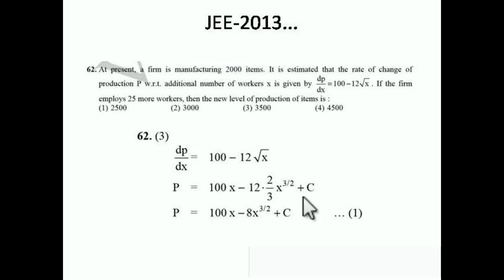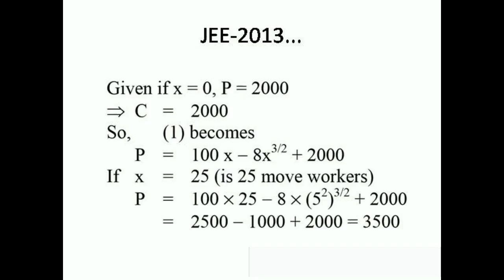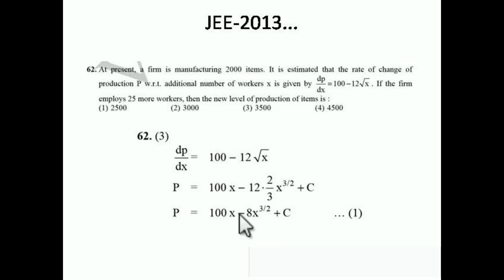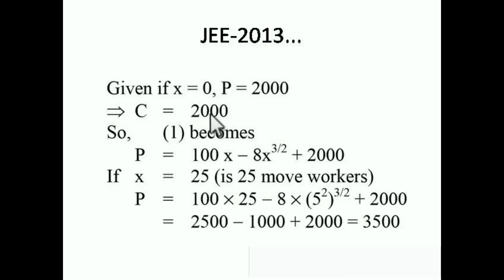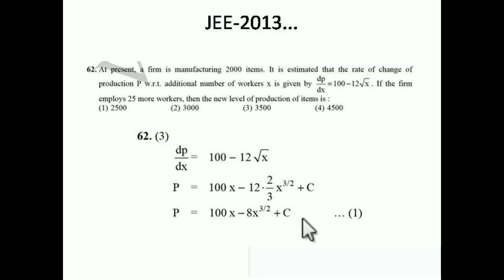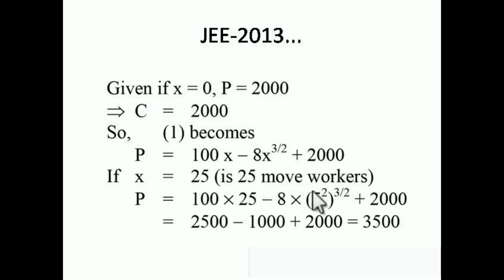We must add the constant c because it is indefinite integration. To find c, they give us the condition: when x = 0, p = 2000. Substituting x = 0 and p = 2000, c becomes 2000. Putting c = 2000 back into equation 1, the production formula becomes p = 100x − 8x^(3/2) + 2000.